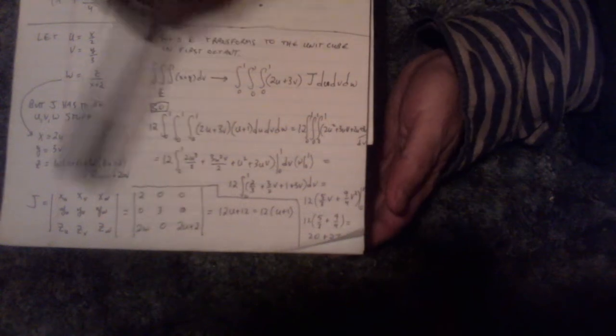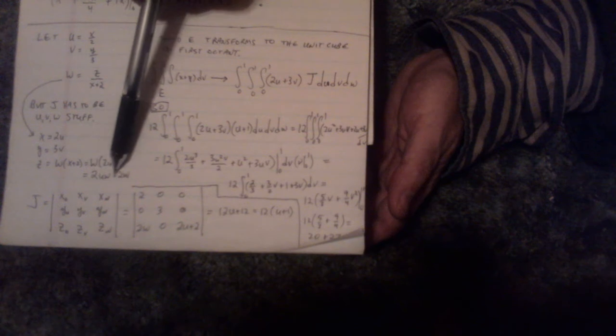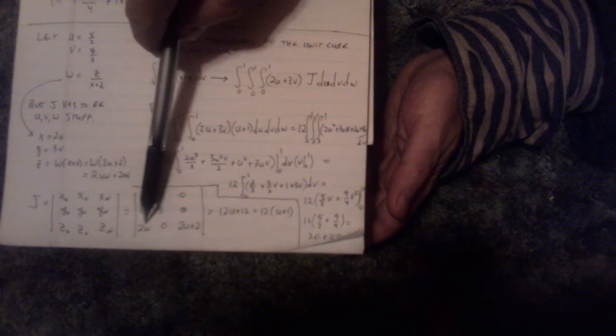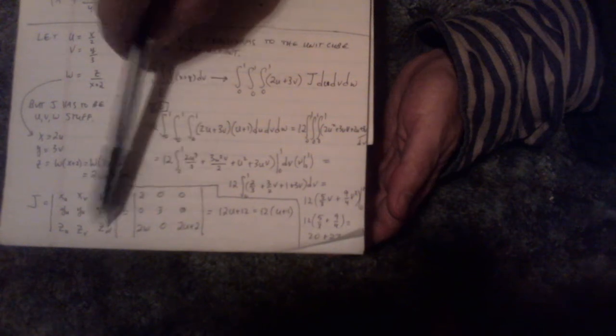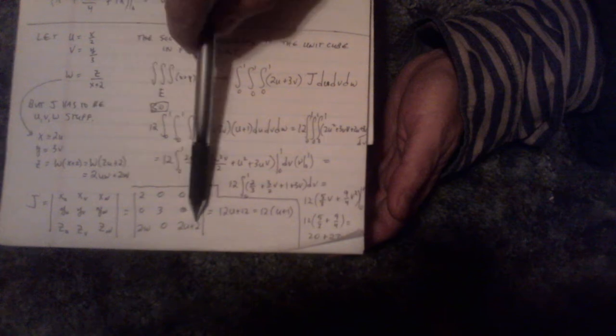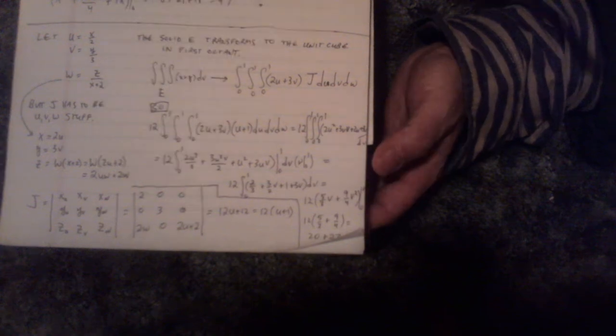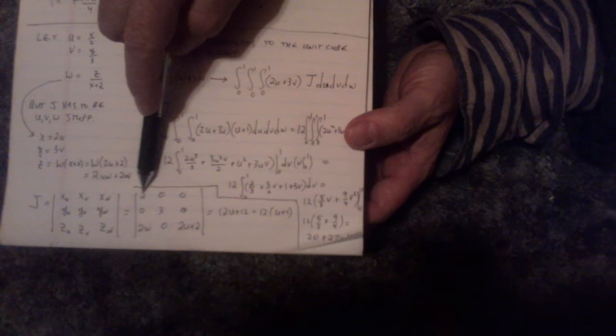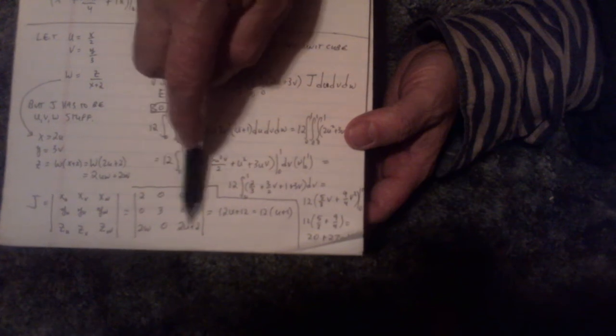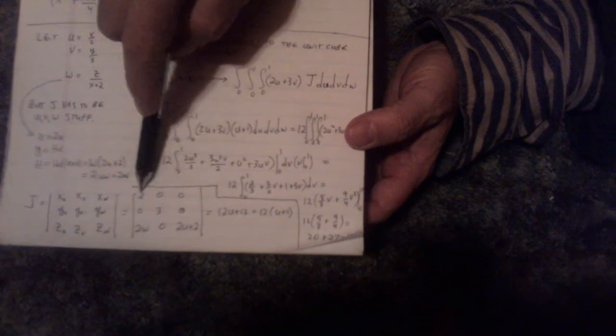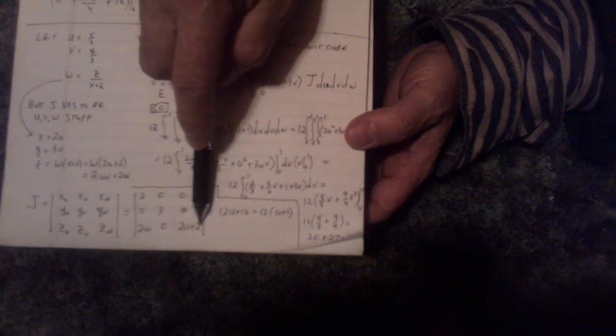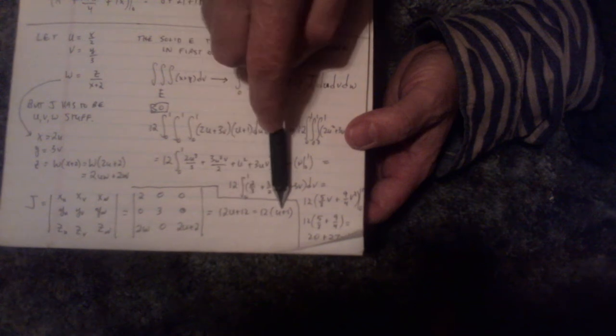And then the last row is the only one that's vaguely interesting because z is equal to 2uw plus 2w. So the partial with respect to u is going to be 2w. And there it is. Partial with respect to v is still all 0s. And then the partial with respect to w. See? That w there. So then I got two terms. 2u plus 2. Now this is a 3 by 3 to evaluate, just like we do the cross product. But with 0s in these two spots, all you really have to do is the 2 times the 3 times 2u plus 2. So it's 2 times 3 times 2u plus 2. And that works out to be 12u plus 12 or 12 times the quantity u plus 1.